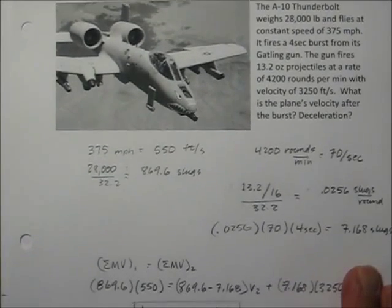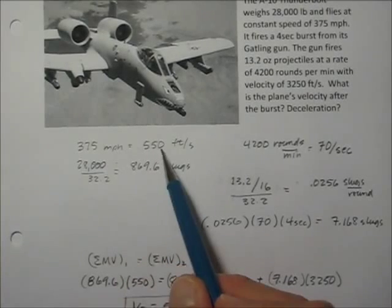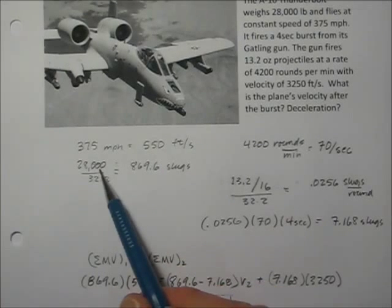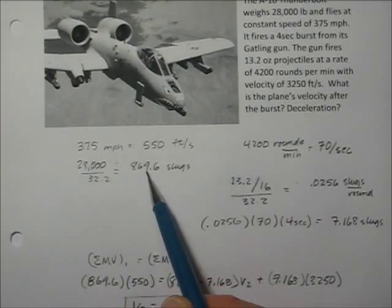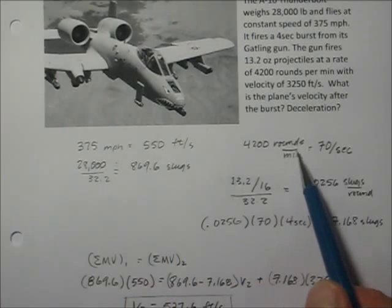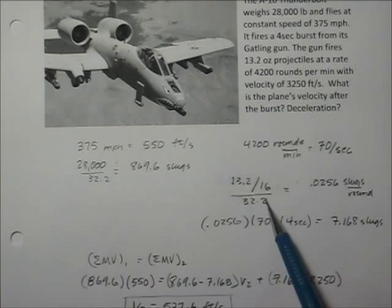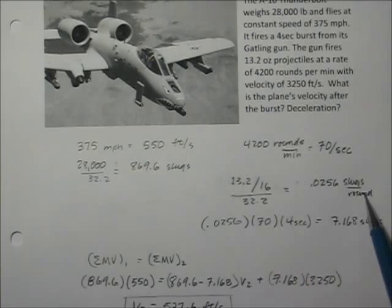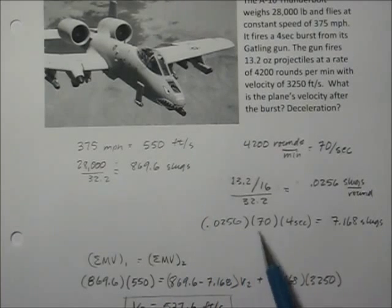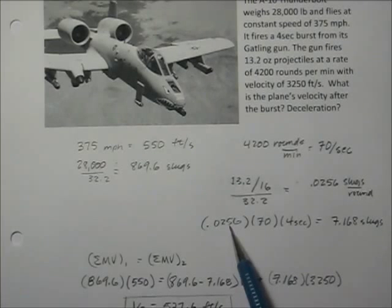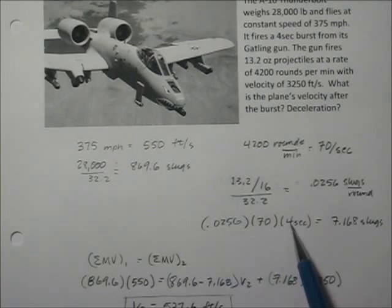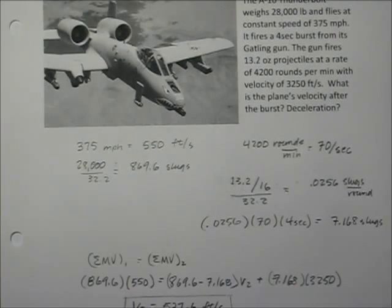Converting units: 375 miles per hour equals 550 feet per second. The mass of the airplane is 28,000 pounds divided by 32.2 = 869.6 slugs. 4,200 rounds per minute equals 70 rounds per second. The mass of each round is 13.2 ounces divided by 16 and then divided by 32.2, giving 0.0256 slugs per round. The total mass of all rounds fired is 0.0256 slugs/round × 70 rounds/second × 4 seconds = 7.168 slugs.